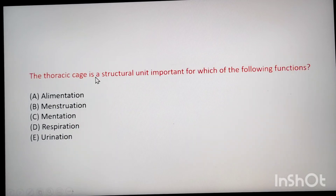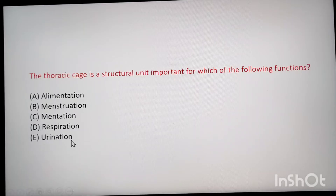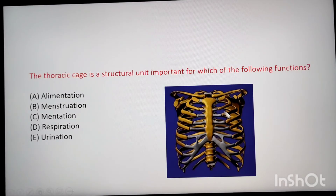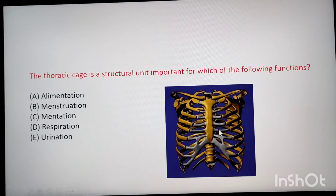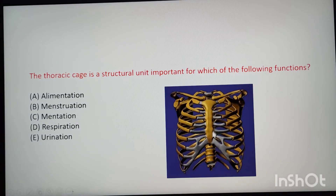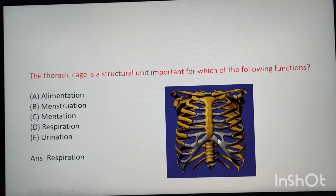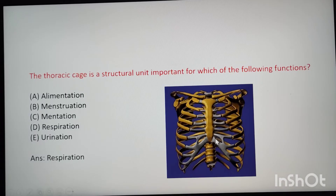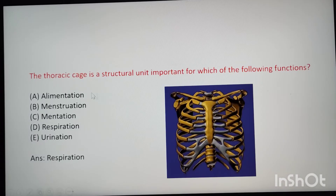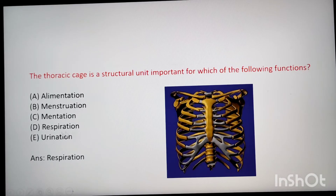Next: the thoracic cage is a structural unit important for each of the following functions. The options are alimentation, menstruation, mentation, respiration, and urination. The answer is respiration. While breathing, the thoracic cage is elevated or depressed depending on inspiration or expiration during the respiratory process.